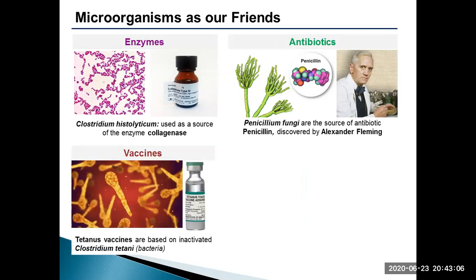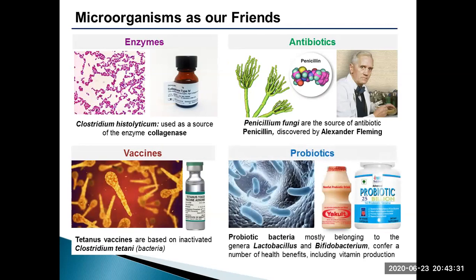Clostridium tetani enters the human body through open wounds and produces a toxin which causes tetanus. Interestingly, the tetanus toxoid vaccine itself is a solution of formaldehyde-deactivated toxin isolated from the same bacteria. Probiotics are live bacteria and yeasts that are good for the human body, especially the digestive system. Examples of probiotic bacteria include Lactobacillus and Bifidobacterium, which are able to synthesize vitamin K and most of the water-soluble B vitamins such as cobalamin, folate, thiamine, etc. in the human body.